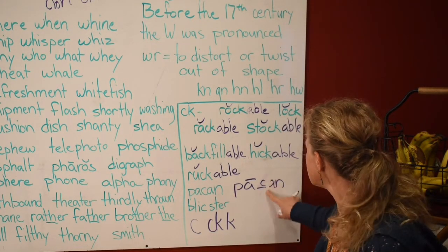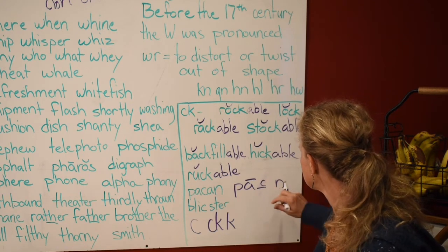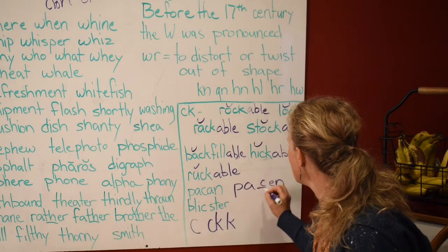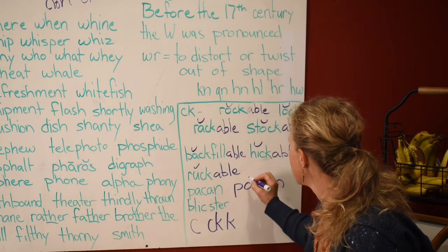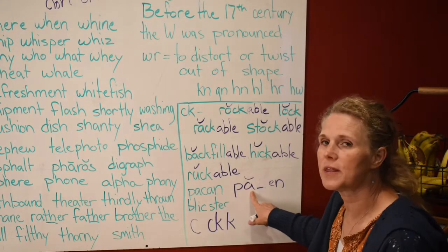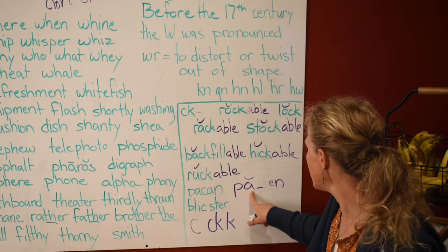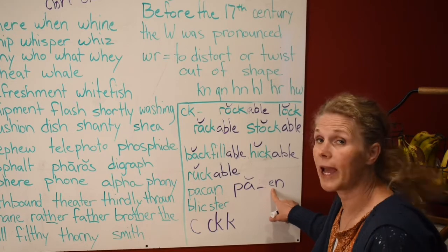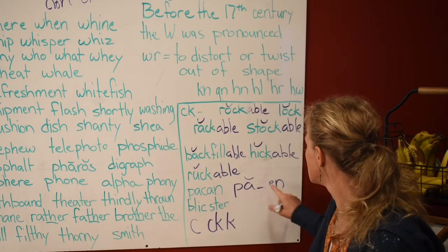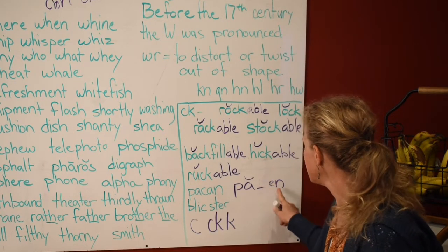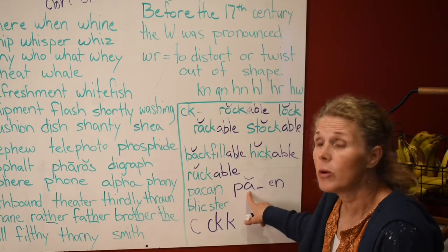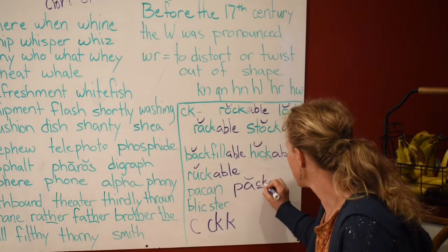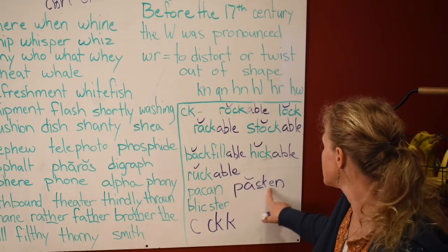But let's change this to a short vowel E and make it say 'pecking.' Can we use a C? No, we can't use a C here. Can we use a CK? We can, because it's a short vowel. So that says 'pecking.'